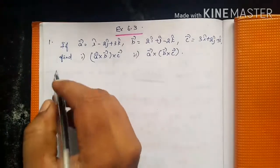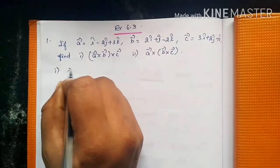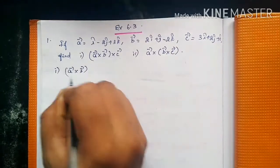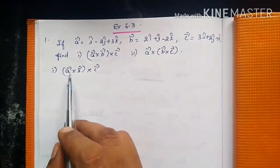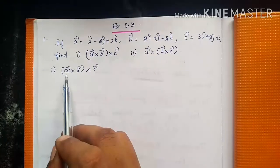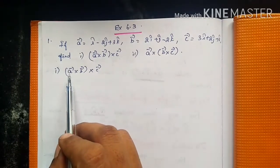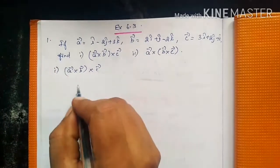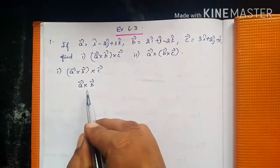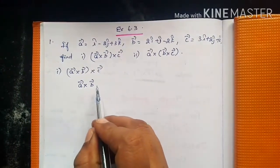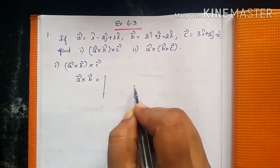We will see the first subdivision: A×B×C, where the bracket is around A×B. First, we will find the term inside the bracket, that is A×B. For the cross product, we can use the determinant form.